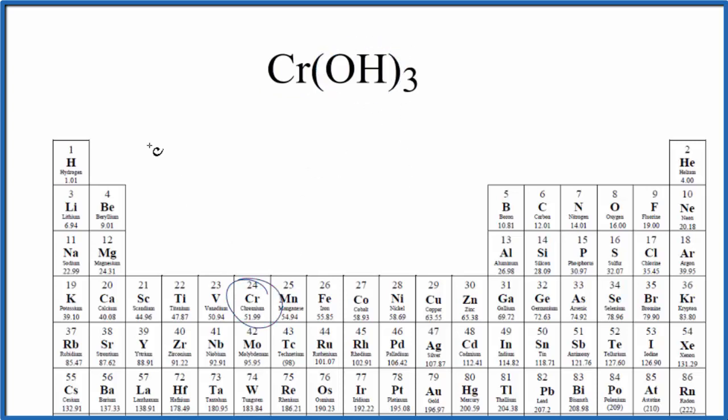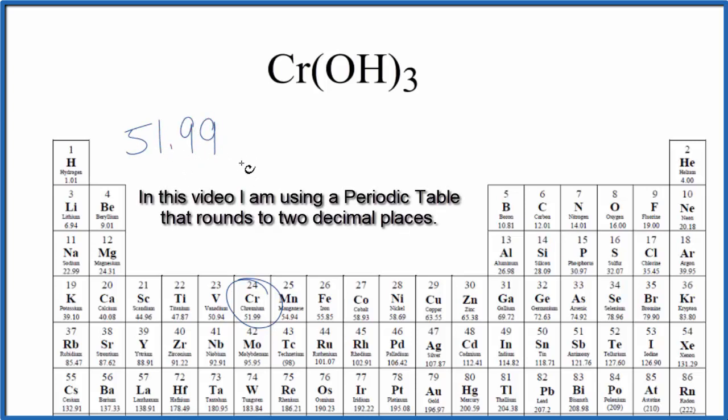So chromium on the periodic table is 51.99, and the units are grams per mole. I won't write that each time. Let's write that at the end. We have one chromium atom here.